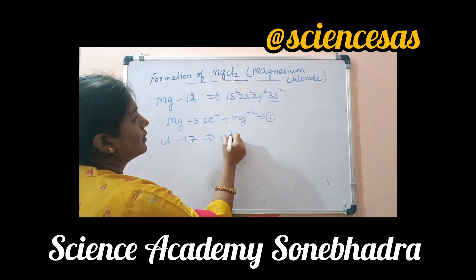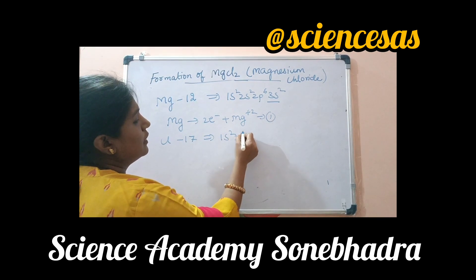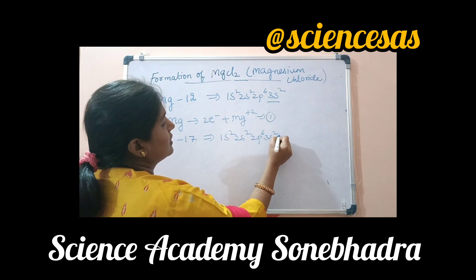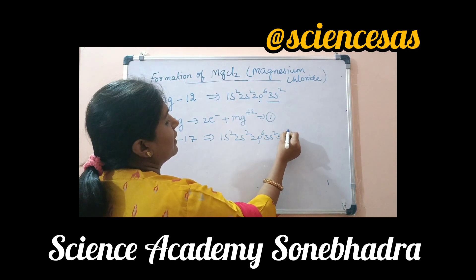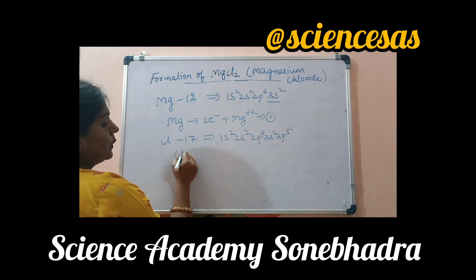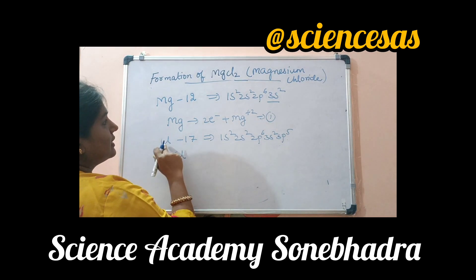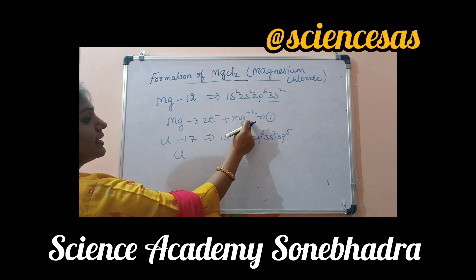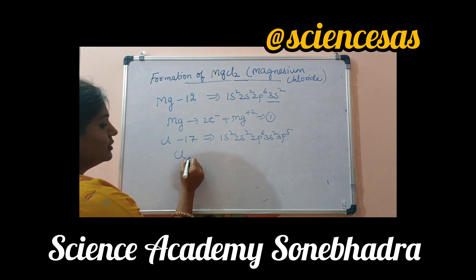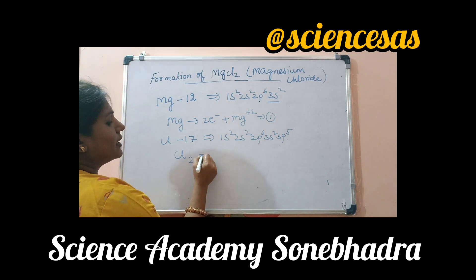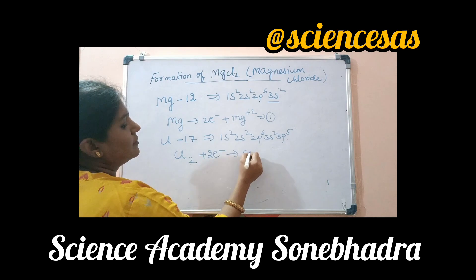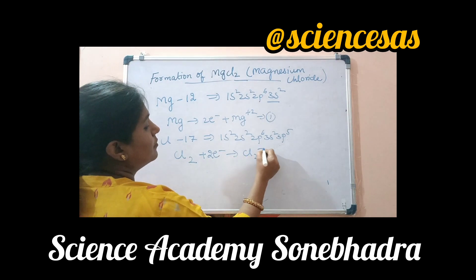Chlorine's electronic configuration is 1s2, 2s2, 2p6, 3s2, 3p5 — it needs one electron. Since magnesium gives two electrons but each chlorine atom needs only one, two chlorine atoms take the two electrons and each becomes Cl⁻.